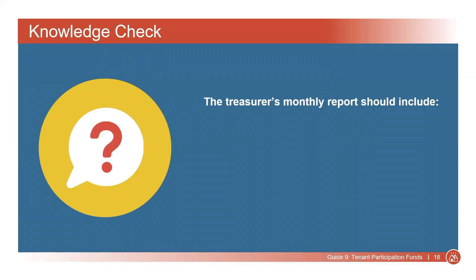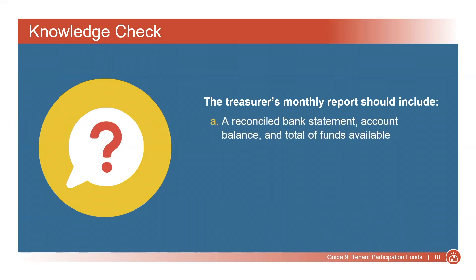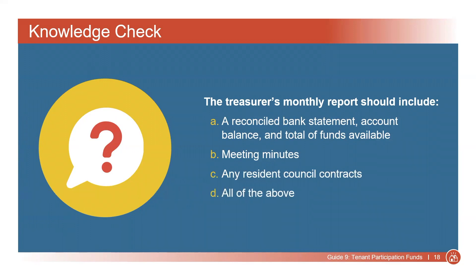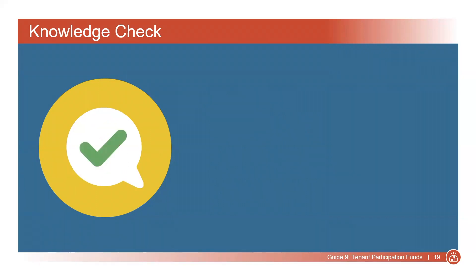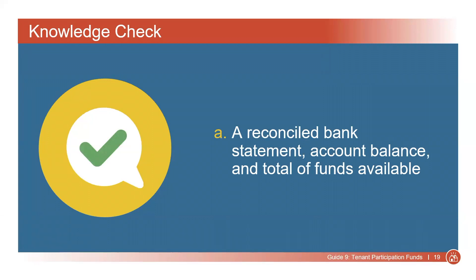The Treasurer's Monthly Report should include: A. A Reconciled Bank Statement, Account Balance, and Total of Funds Available; B. Meeting Minutes; C. Any Resident Council contracts; or D. All of the above. The correct answer is A. The Treasurer should definitely keep meeting minutes and any contracts that involve finances. However, the monthly Treasurer's Report mainly needs to include a Reconciled Bank Statement, Account Balance, and Total of Funds Available.